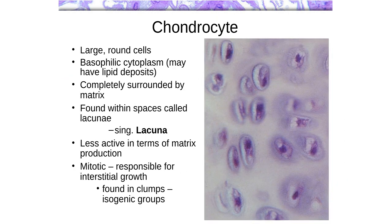Chondrocytes usually appear larger under the microscope and still have fairly basophilic cytoplasm because they continue producing matrix — just enough to maintain the matrix around themselves. They may also have some lipid deposits, because since nutrients must travel to them by diffusion, if the cartilage becomes large the diffusion may become less efficient, so cells sometimes store extra energy in the form of lipid.